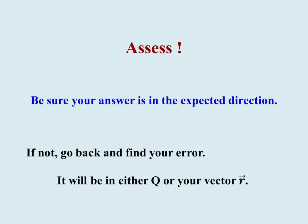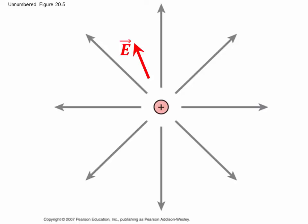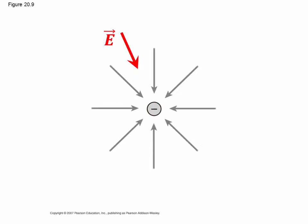But always assess. Be sure your answer is in the right direction. If you find it's not, go back and find your mistake, which is probably in q or your vector r. For a positive charge, the field should point away from the positive charge. If there's a negative charge, the field answer should be pointing towards that negative charge.